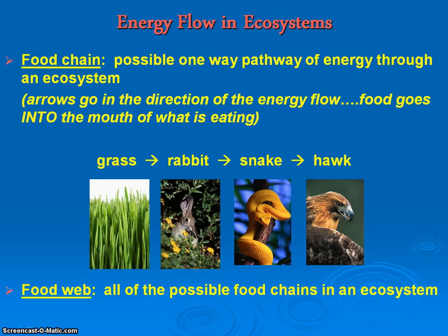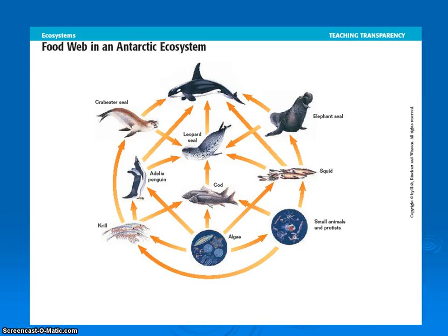A food web is going to be multiple food chains put together and how they interact — the organisms within those food chains interact with each other to form a food web. Here's an example of a food web. Looking at this picture, you should be able to determine that there are six different possible food chains embedded within this food web.